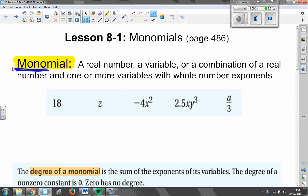Mono means one, so we're going to look at expressions with exactly one term today. A monomial can be any number of things. It could be a real number, it could be a variable, or it could be a combination of a real number and one or more variables with whole number exponents. It's important that all exponents that you see be whole numbers, otherwise this is not considered a monomial.